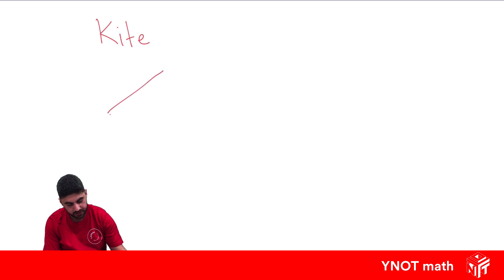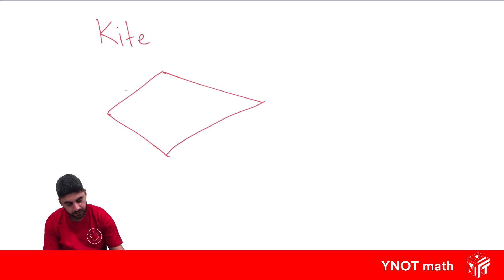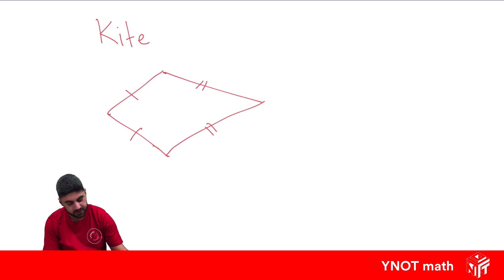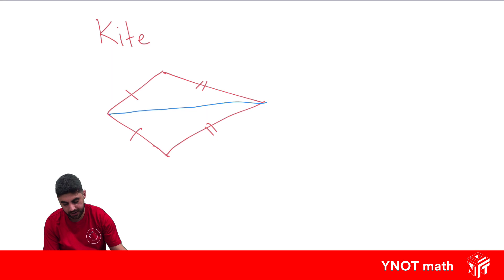Our third quadrilateral is a kite. A kite looks something like this, where these two sides are equal to each other and these two sides are equal to each other. Just like the rhombus, we need to know the lengths of the diagonals.